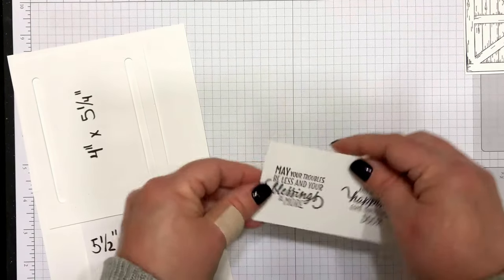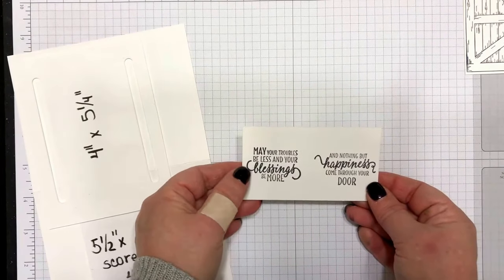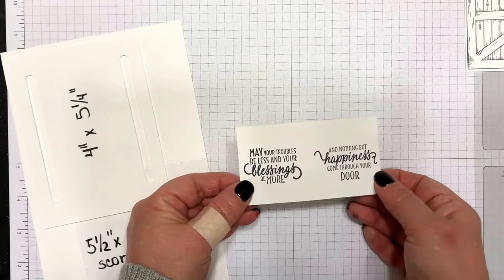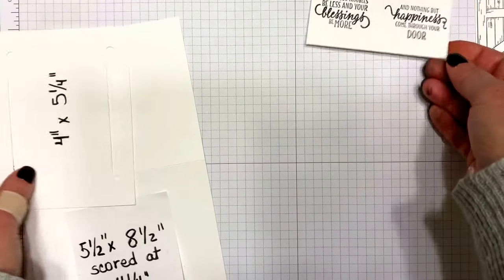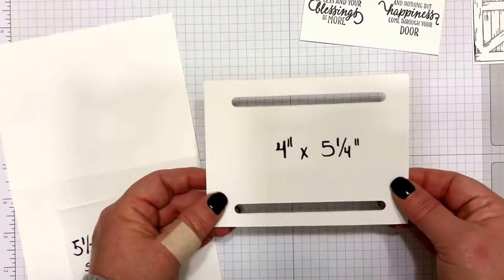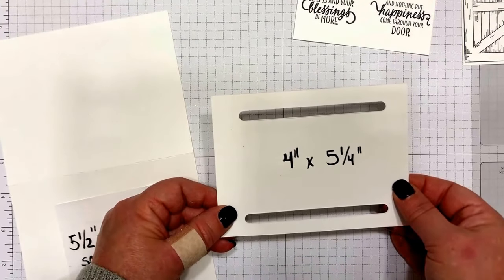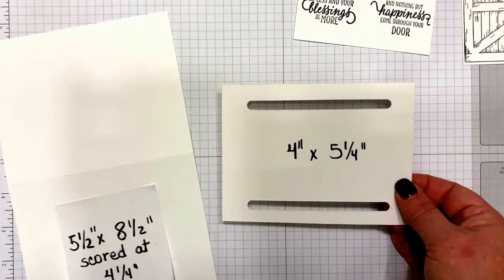I've already stamped that, and as you can see I put one greeting as far to the left as possible and one to the right. I just used Memento black ink on that one. The next piece you'll want to cut is your slider piece. This measures four inches by five and a quarter inches, and again you'll use that die cut with the slider piece on there to create that.